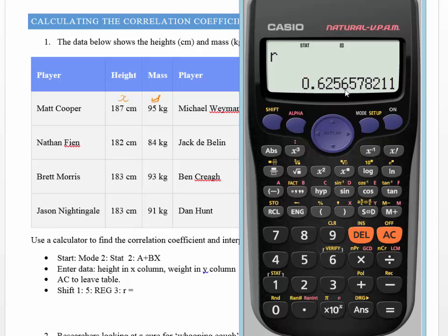So we would say that it's probably a moderately positive correlation. Moderate positive correlation. And the correlation is, to two decimal places, 0.63.